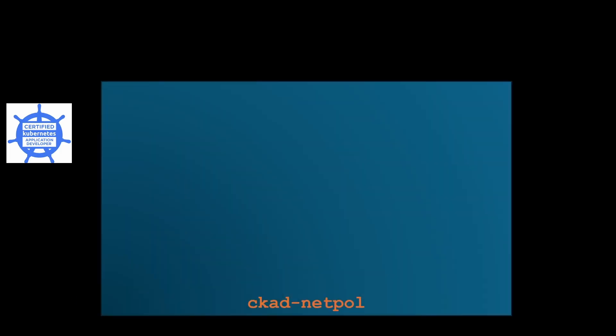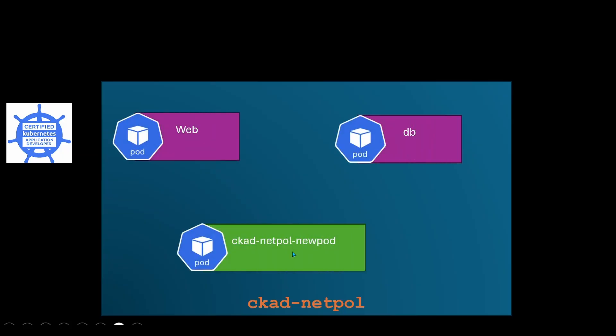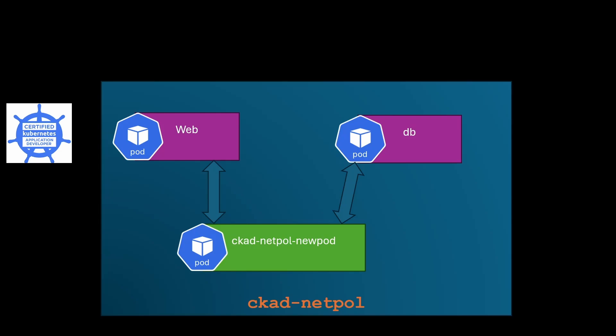Let's take an example. This is my namespace, CKAD netpol. In this namespace, we have three pods: web, DB, and netpol. Ideally, when no network policies are applied, all three pods can communicate with each other — ingress and egress traffic are allowed.